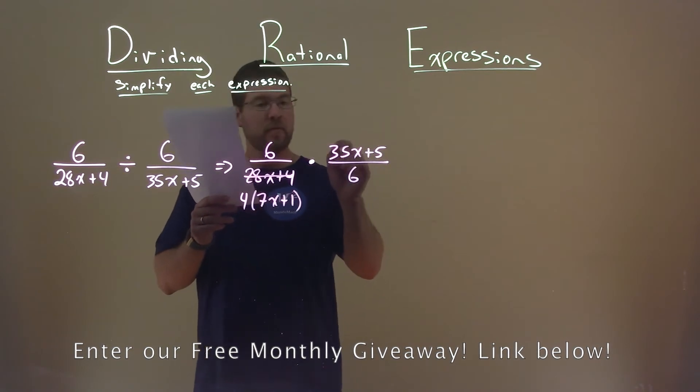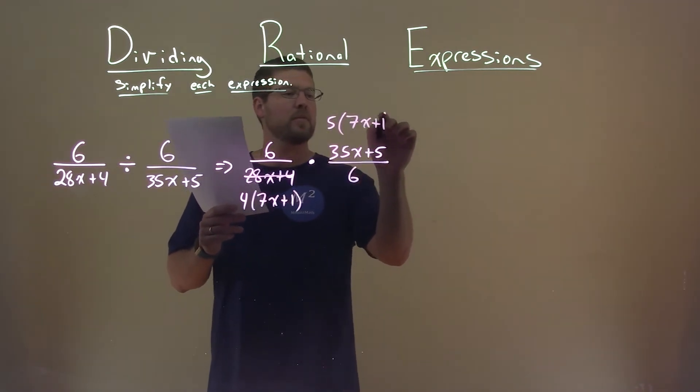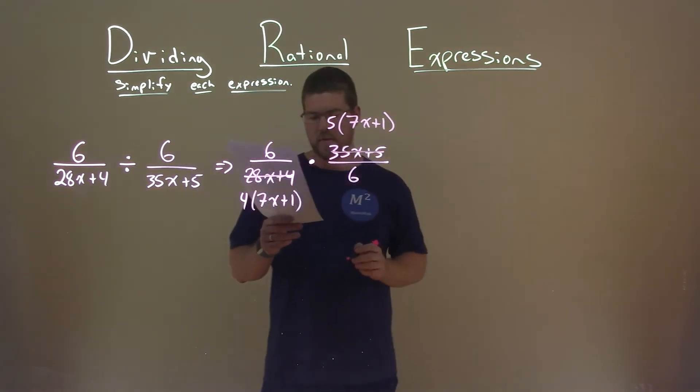35x plus 5, I can pull out a 5 as well here, and I'm left with 7x plus 1, replacing that 35x plus 5.